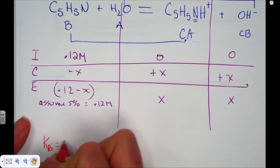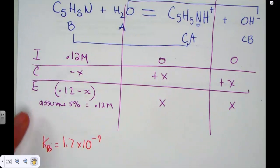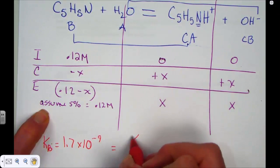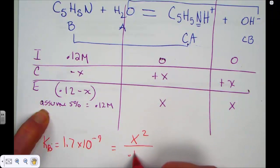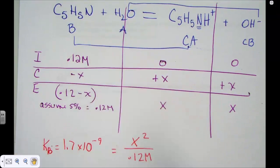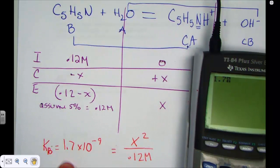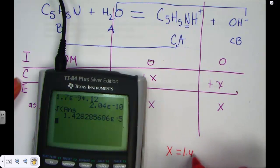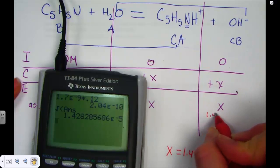Pyridine has a Kb of 1.7 times 10 to the negative 9. We need to know that. And that expression is products over reactants. Let's solve for X. The product of X and X, I'll just write that X squared, set over 0.12. I'll cross-multiply, 1.7E negative 9 times 0.12. That's X squared, 2.04 times 10 to the negative 10th. When I square root that answer, I find the value of X, 1.43 times 10 to the negative 5th.